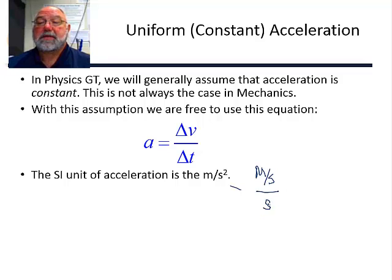When you divide by something in fractions, it's the same as multiplying by one over. So meters per second times one over seconds is how we end up with meters per second squared.